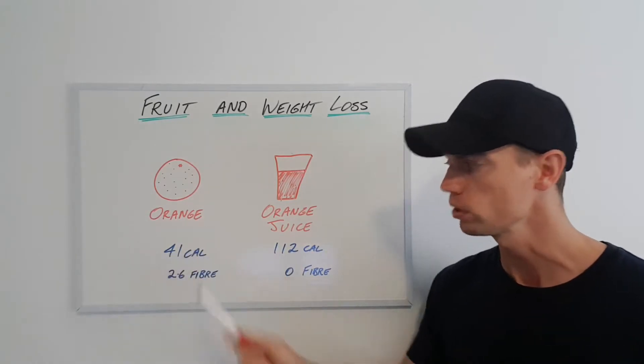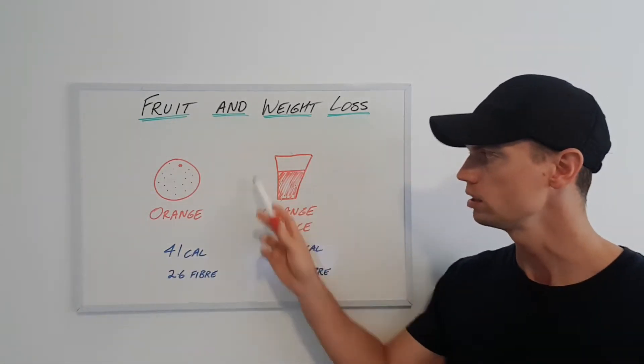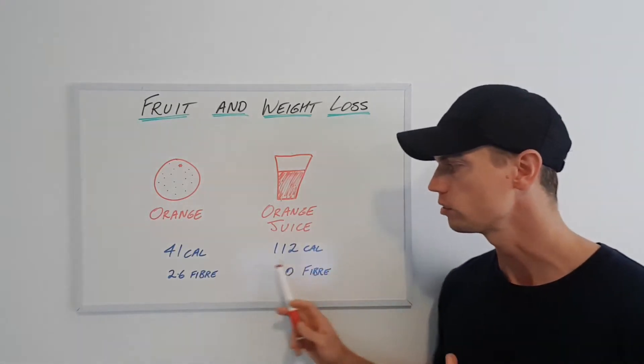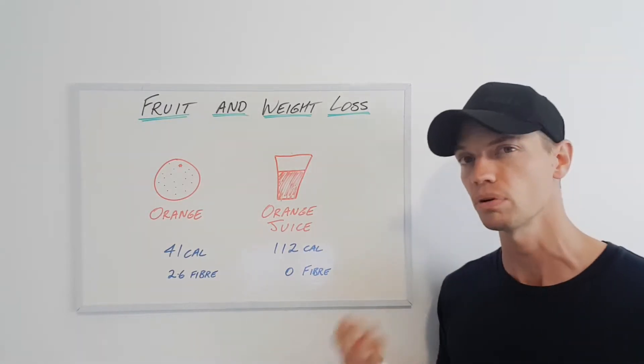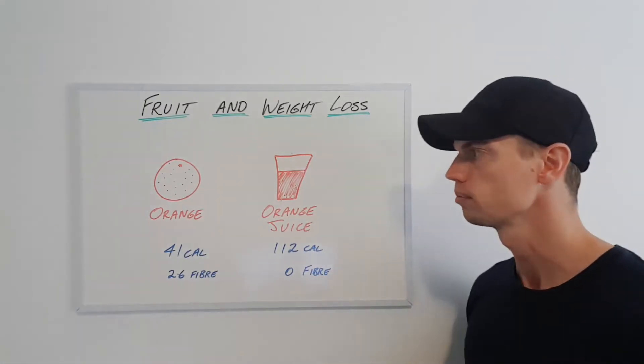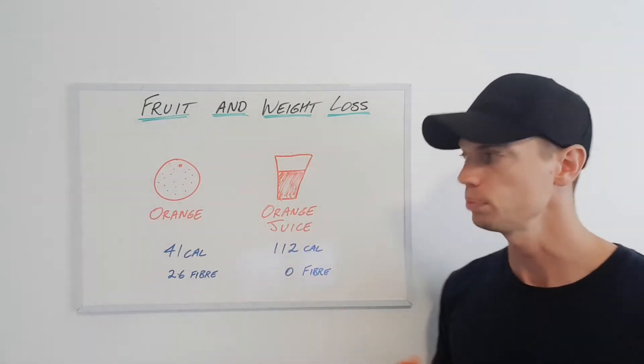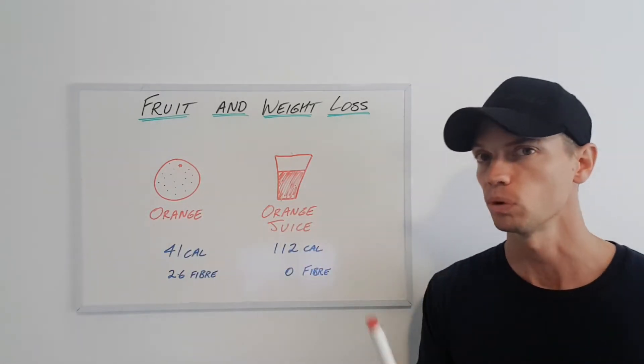So an orange has got 41 calories in it on average and this small glass of orange juice, this is 250 ml, has got 112 calories in it, almost three times as much. That's a pretty major difference, right? And which one of these do you think would probably fill you up more?